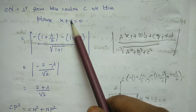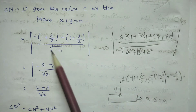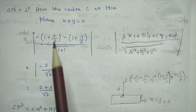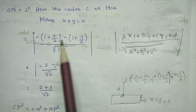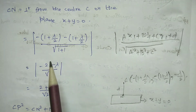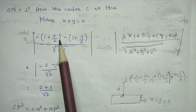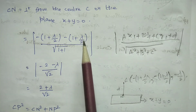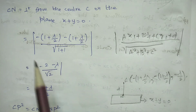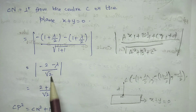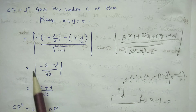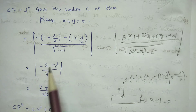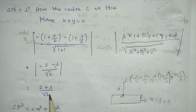The denominator is √(1² + 1²) = √2. The numerator simplifies: 1·(−(1+λ)/2) + 1·(−(1+λ)/2) = −(1+λ). So CN = |−(1+λ)| / √2 = (−2 − λ) / √2, giving CN = (2 + λ) / √2.